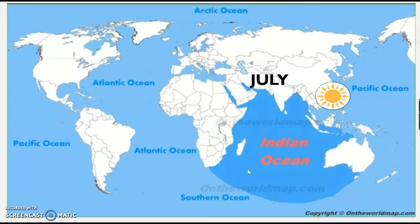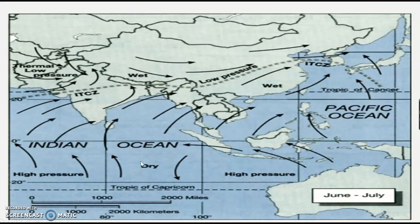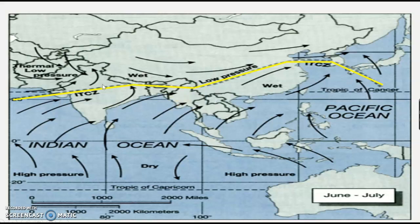In June to July, the sun is over the northern hemisphere. The North Indian Ocean warms up, and the wind travels back from the southern hemisphere to the northern hemisphere. In June to July, high pressure exists in the southern hemisphere, and wind moves toward the northern hemisphere. The ITCZ, which was over the southern hemisphere in December to January, is now forming over India in June. The southern hemisphere wind and the northern hemisphere wind collide here, forming a low pressure area.